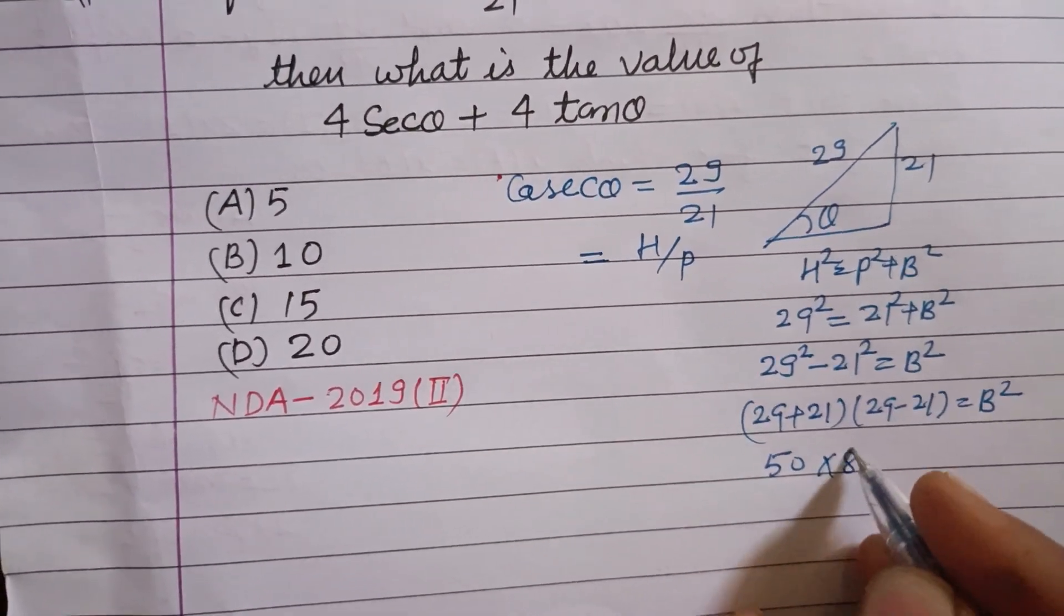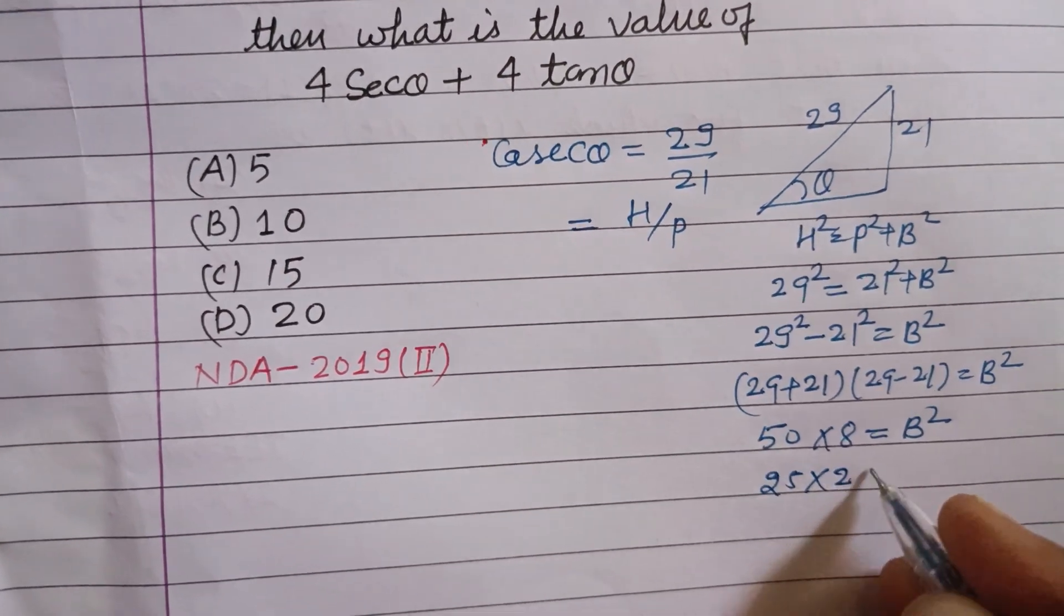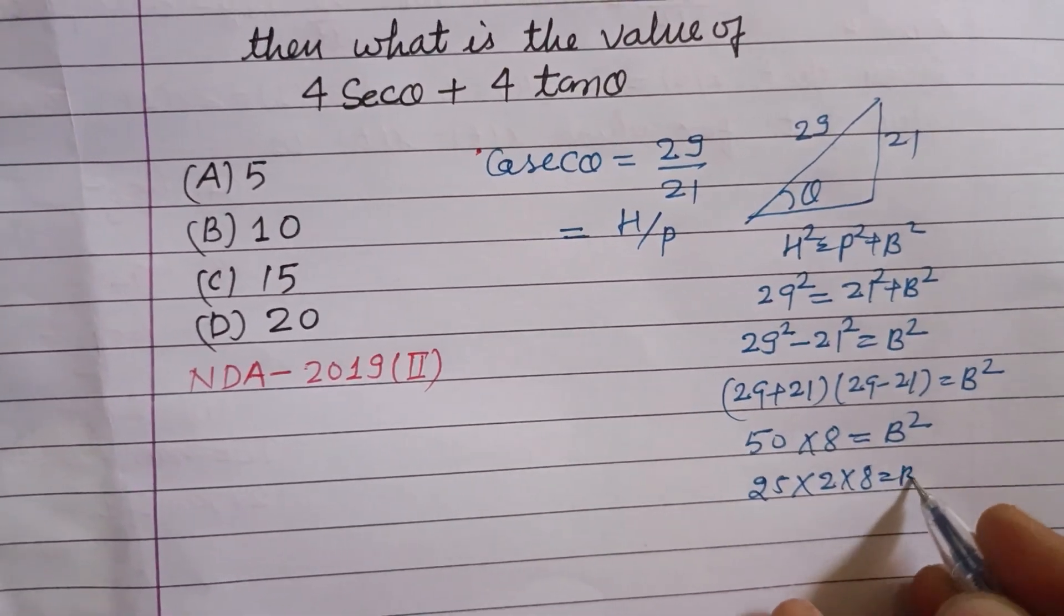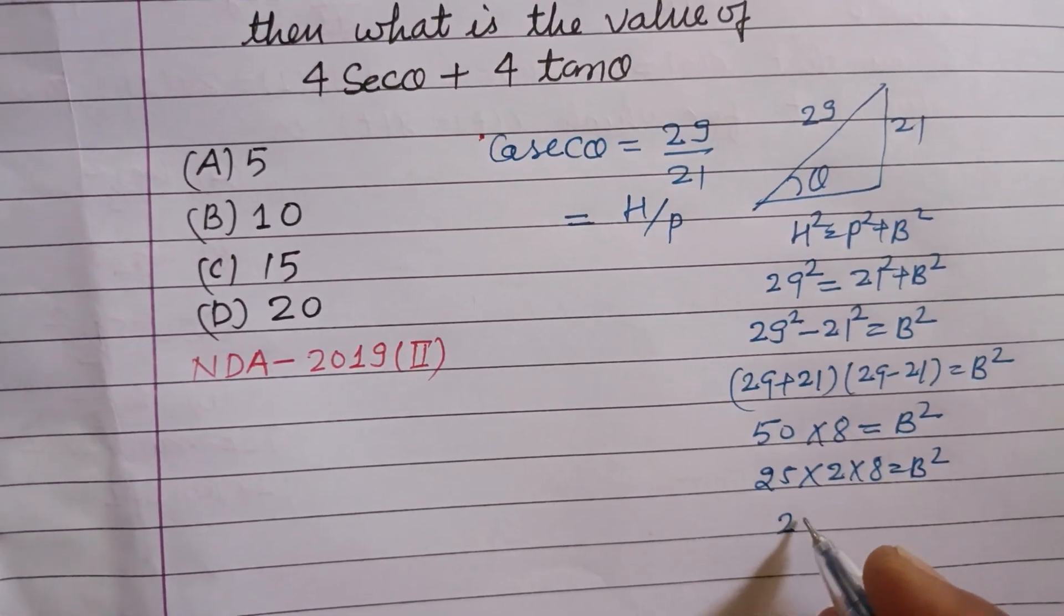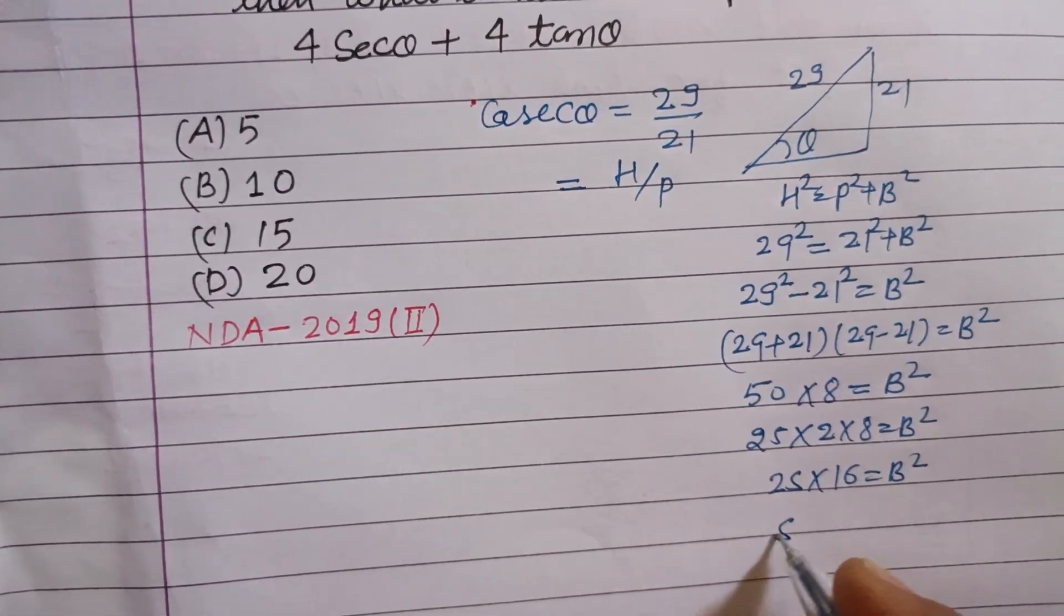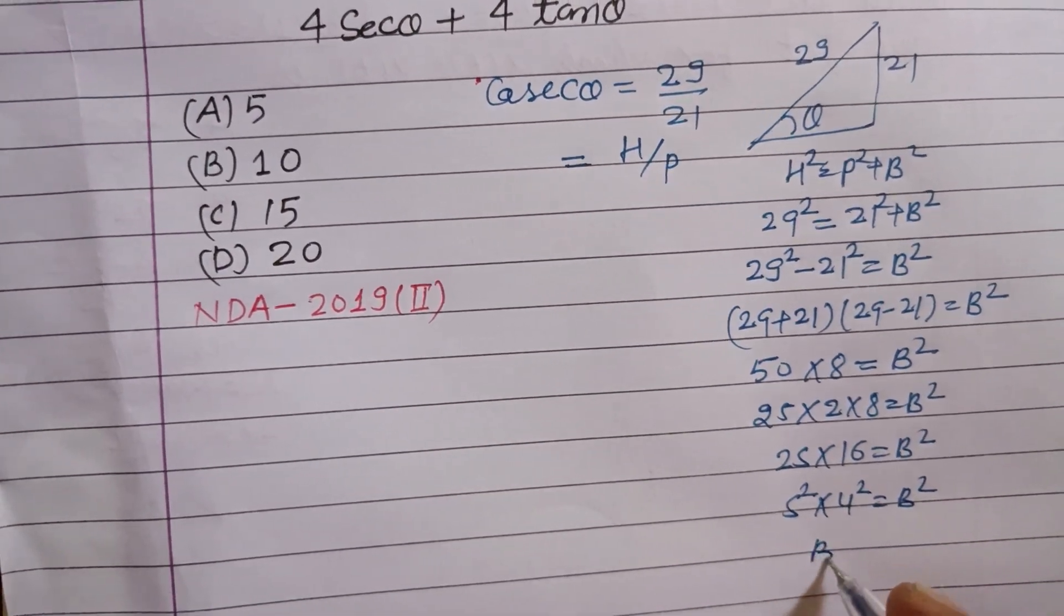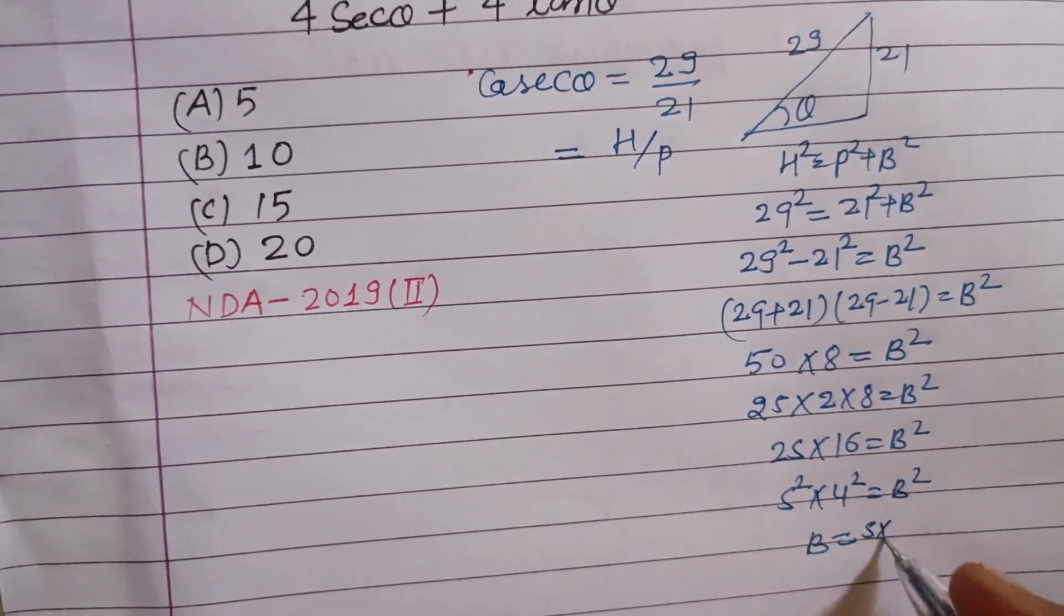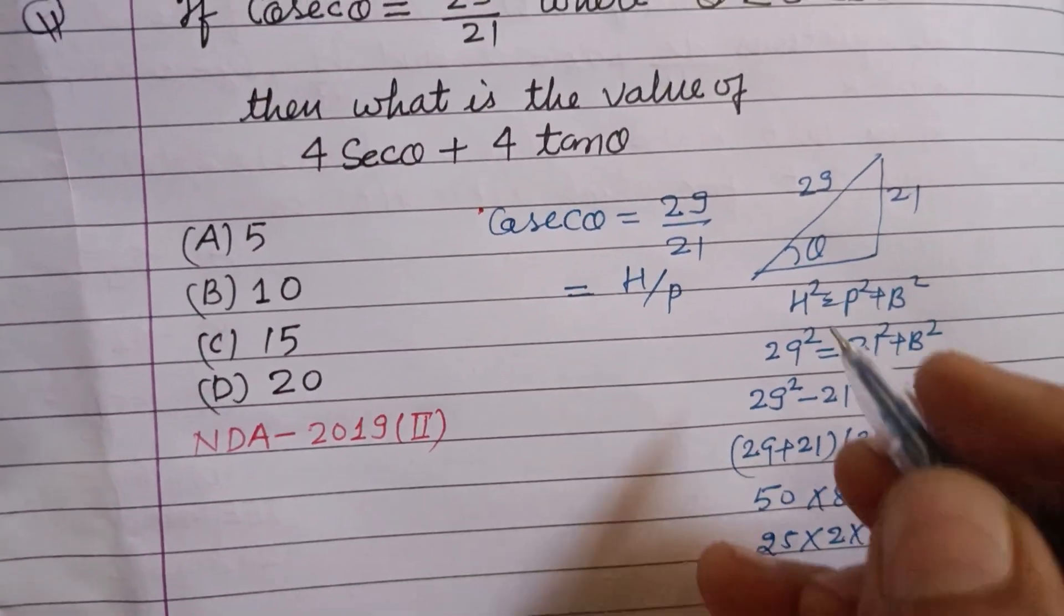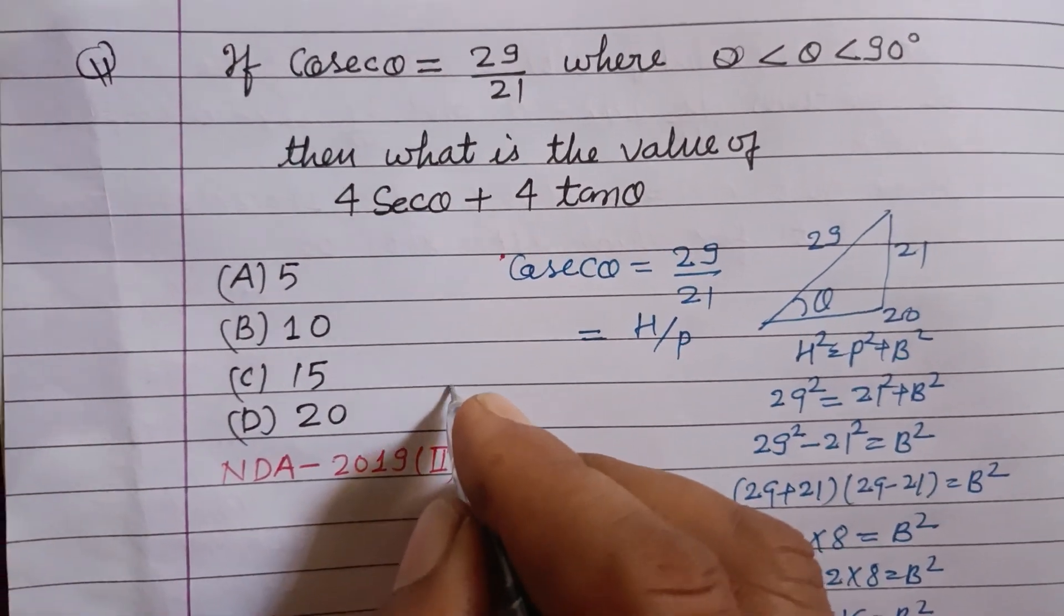So this is 50 and this is 8, b squared. So 50 can be written as 25 into 2, into 8, that is b squared. It is 25 into 16 equals b squared. This is 5 squared, this is 4 squared, equals b squared. Therefore b equals 5 into 4, or that is 20. So 20 is the base.